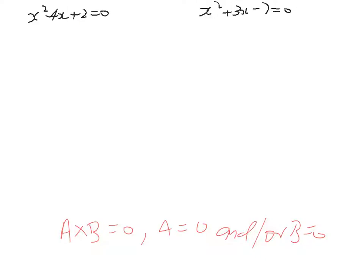Sometimes we won't have factors of numbers that add up to make up the other term. Factor 2: 1 and 2, or 2 and 1, they're not going to add up to make negative 4. Factors of negative 7 are 1 and negative 7, or negative 7 and 1 — they're not going to add up to 3.